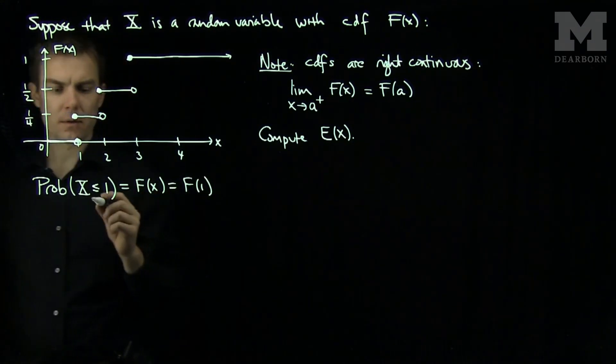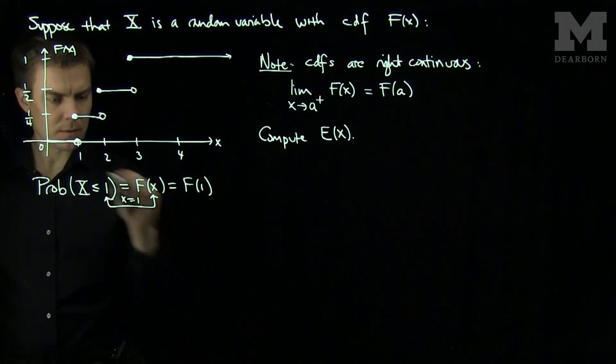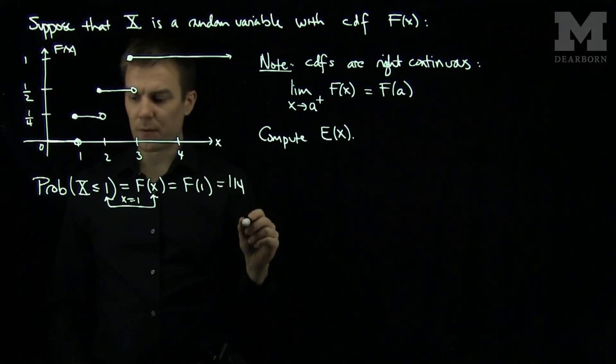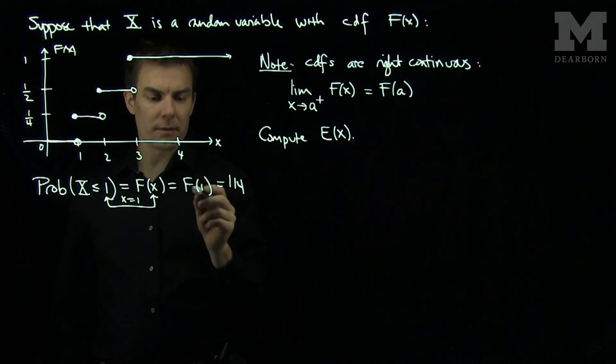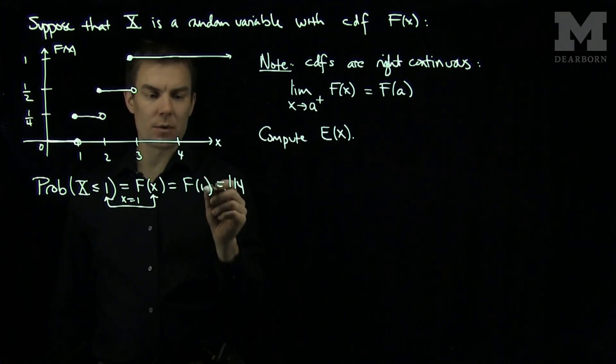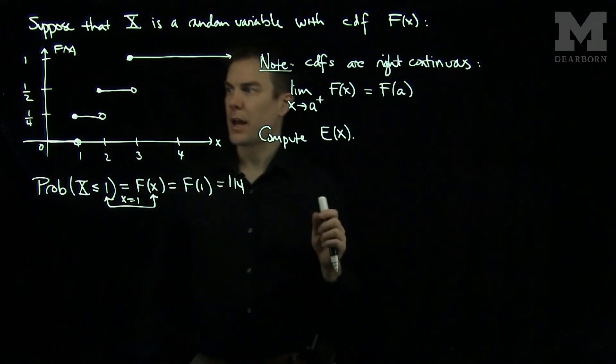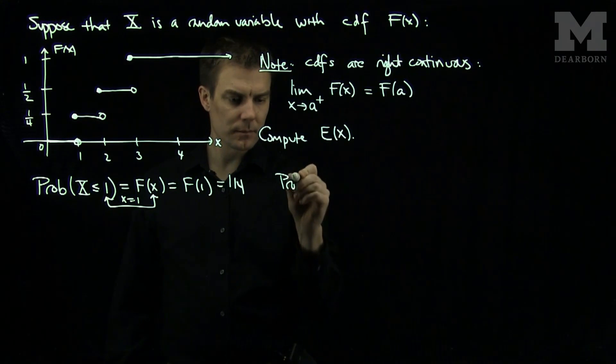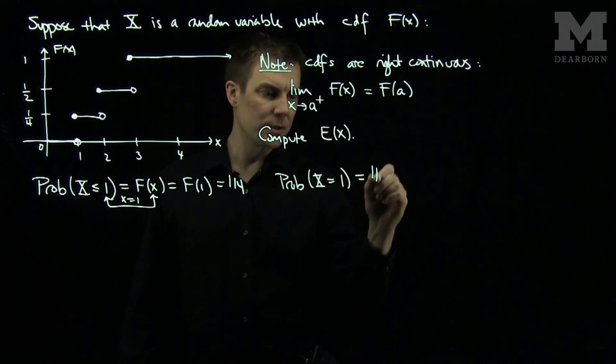We see that F(1) is equal to 1/4. And if anything strictly less than 1, we'll be at 0. So the random variable takes on the value of 1 with probability equal to 1/4. So the probability that X is equal to 1 is 1/4.